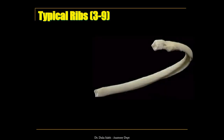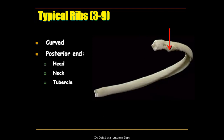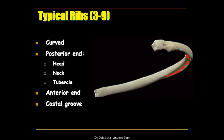Regarding the ribs, they are 12 in number. The ribs which share the same criteria are called the typical ribs, numbered from 3 to 9. The typical ribs are curved and have a posterior end containing the head, the neck, and the tubercle, and a cup-shaped anterior end that articulates with the costal cartilage. The inner surface of the shaft near its lower border contains a groove called the costal groove.